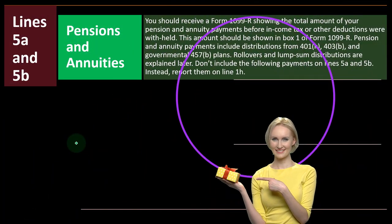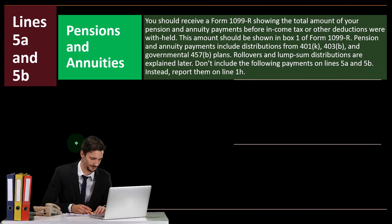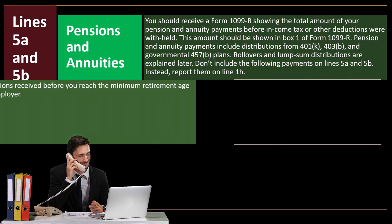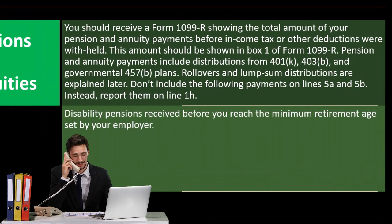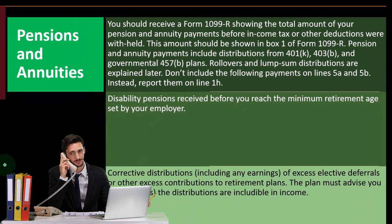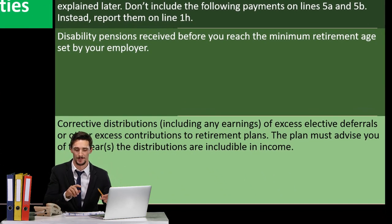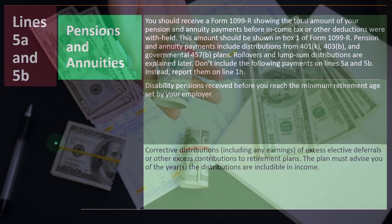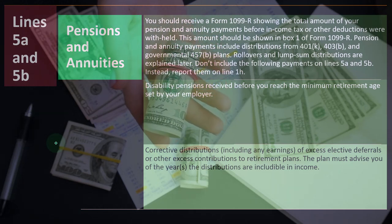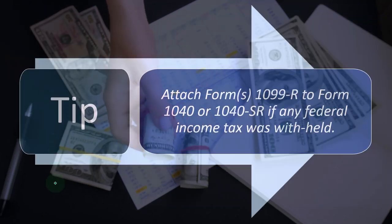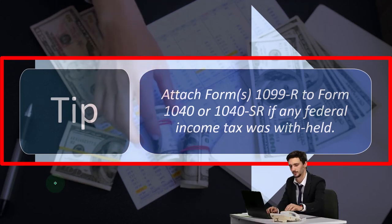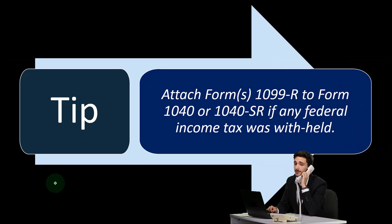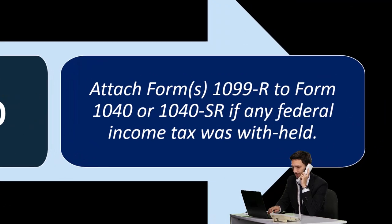Rollovers and lump sum distributions are explained later. Do not include the following payments on line 5A and 5B — instead, report them on line 1H: disability pension received before you reach the minimum retirement age set by your employer, and corrective distributions including any earnings of excess elective deferrals or other excess contributions to retirement plans. The plan must advise you of the years the distributions are includable in income. Attach Forms 1099-R to Form 1040 or Form 1040-SR if any federal income tax was withheld. The 1040-SR is used when you're in your retirement years.